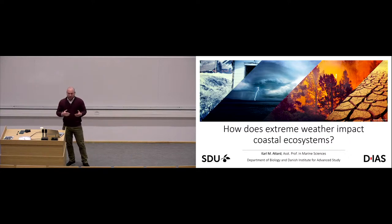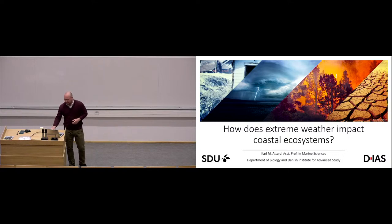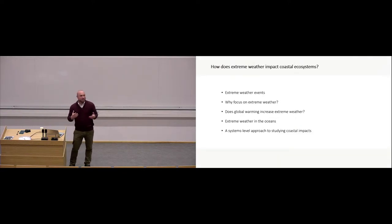So my talk is going to be primarily about extreme weather and how it impacts coastal ecosystems, but it also takes a broader view towards extreme weather. And in particular I'm going to talk about what extreme weather events could be, why we should focus on extreme weather, and in my research I also had thought about, you know, does global warming increase extreme weather at all? And then I'll move to the oceans where I'll give some examples of how extreme weather manifests in the oceans, and I'll end with my vision for my position over here, which looks at trying to obtain a systems level understanding of coastal impacts.